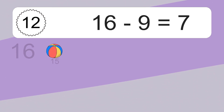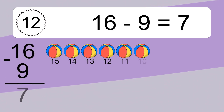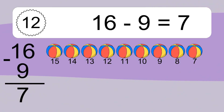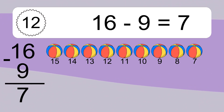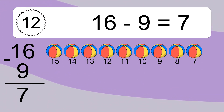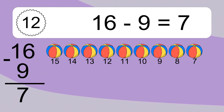16 minus 9 equals what? 16 minus 9 equals 7. Let's count it: 15, 14, 13, 12, 11, 10, 9, 8, 7.